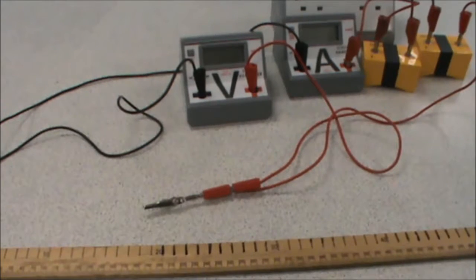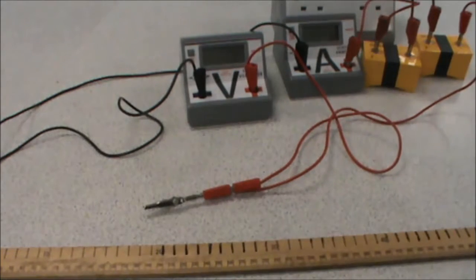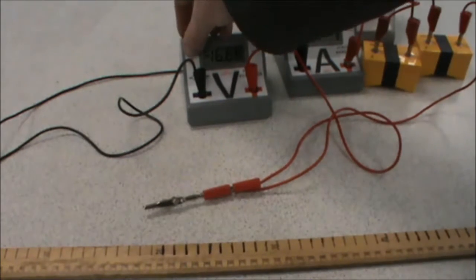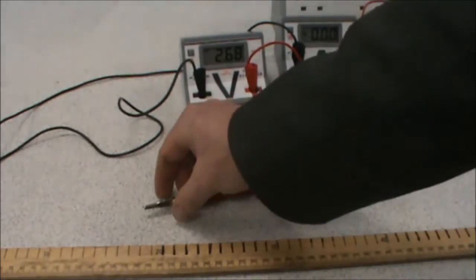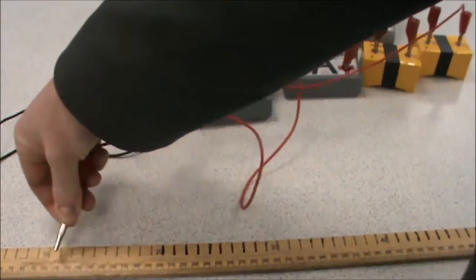Now, before we do any actual measurements for our circuit, we do a quick preliminary investigation to make sure that we have sufficient voltage from our cells, and that we can get some accurate readings at a suitable range of readings on our meter rule. So we turn the voltmeter on, and we turn the ammeter on, and we connect up the circuit at 10 centimeters.